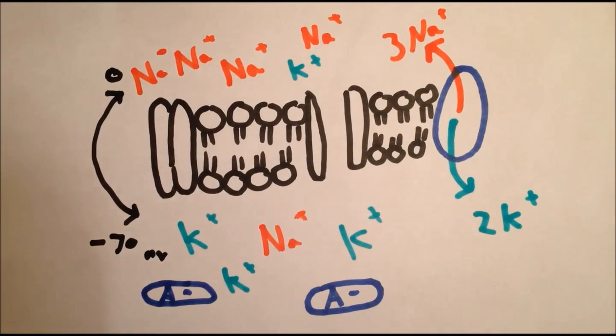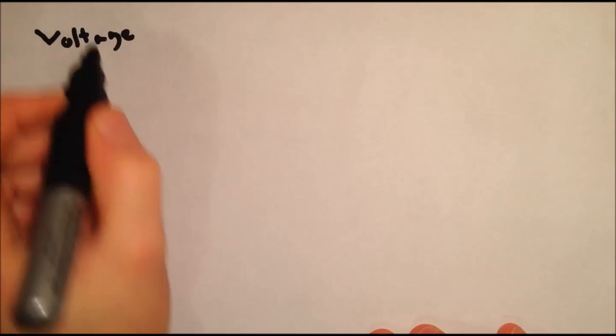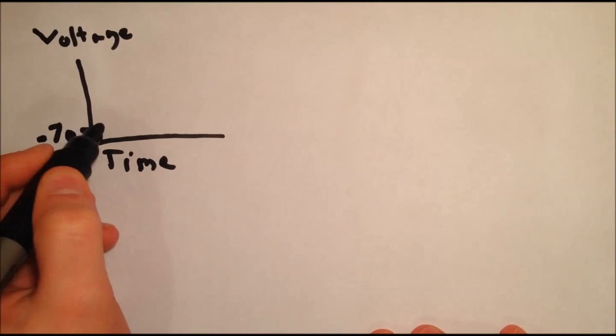Despite sodium being pumped out and potassium being pumped in, some ions diffuse back across the membrane. Eventually all these factors balance out so the membrane maintains a stable equilibrium, with the inside of the cell negative relative to the outside. This is known as the resting potential, and is usually about minus 70 millivolts.